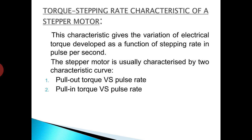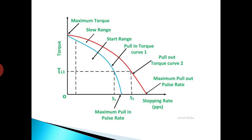A stepper motor is usually characterized by two characteristic curves: the first is the pull-out torque versus pulse rate, and the second is the pull-in torque versus the pulse rate characteristic. The pull-in torque curve shows the maximum stepping rate at which the stepper motor can start, synchronize, stop, or reverse its direction of rotation for different values of load torque.